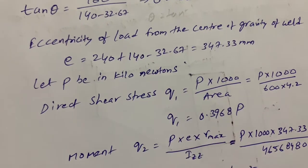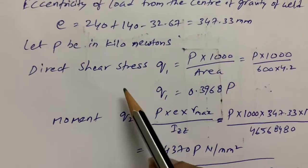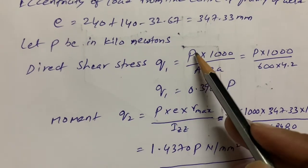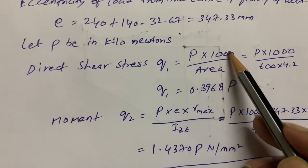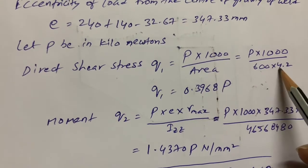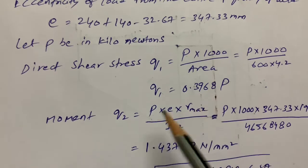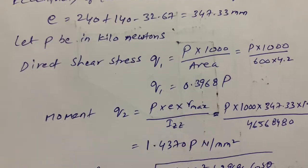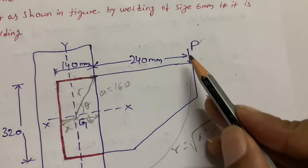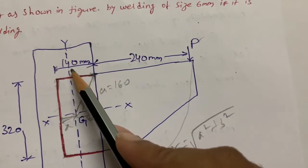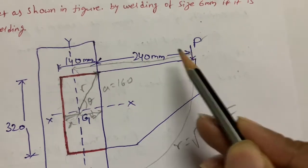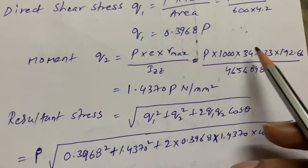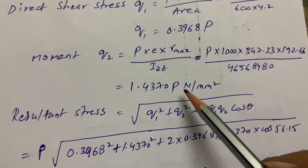Let P be the load in kilonewtons. The first shear stress formula is: q1 = load / area = P × 1000 / (600 × 4.2). Next, the shear stress due to moment is calculated as: q2 = M × R_max / Izz, where moment M = P × e (force times perpendicular distance), and R_max is the radial distance.